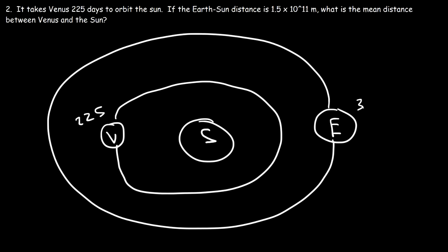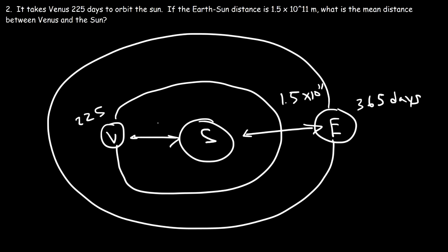We know the Earth-Sun distance is 1.5×10¹¹ m, and we need to find the Venus-Sun distance. We'll call it R₂ — that's the missing variable we're looking for.